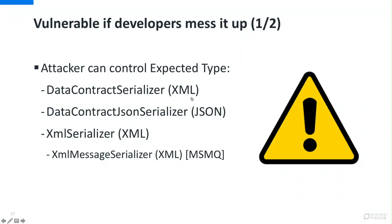Apart from those deserializers that are vulnerable in their default configuration, there are other serializers known as template deserializers that work with an expected type. If you want to deserialize something, they will only work with one type — for example, if you're expecting a shopping cart instance, you cannot send an ObjectDataProvider payload because that won't work. Examples of this are the data contract serializer, data contract JSON serializer, and XML serializer.